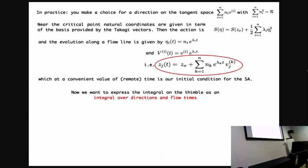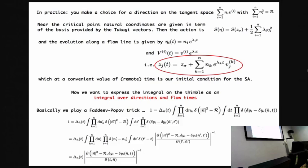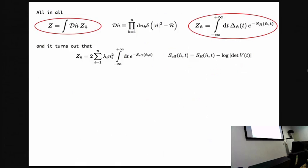So how can we proceed now? We want to go to an integral which is explicitly over directions and flow lines. And the answer, well, you play some sort of Faddeev-Popov trick, which means you simply rewrite one in a funny way which entails the definition of a determinant. The end of the story is that your partition function on that thimble is expressed as a combination of partition functions, each attached to a direction.